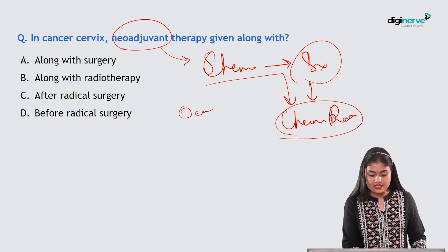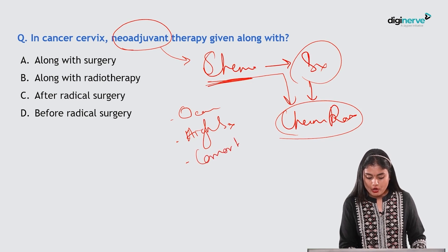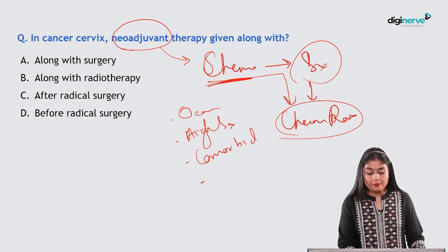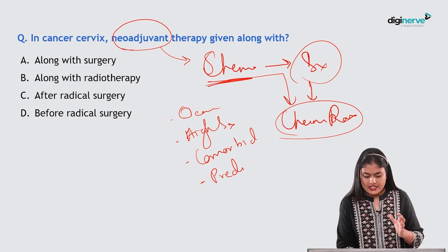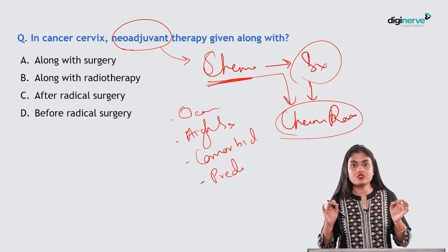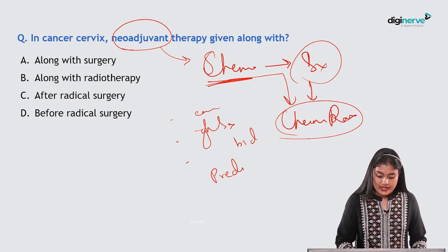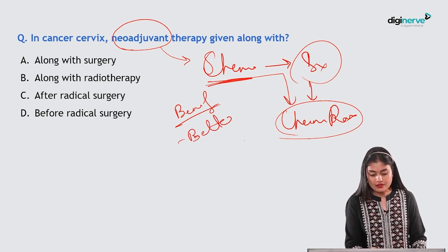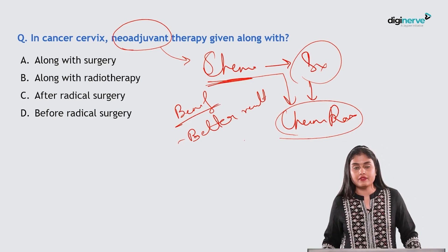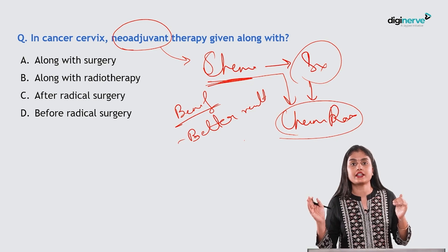Neoadjuvant therapy is used in ovarian cancers, patients with high surgical risk or multiple comorbidities, and when complete tumor debulking is predicted to be impossible upfront. The benefit is better results compared to direct surgery — improved effective lifespan. In such large tumors with risk factors, it is better to give chemo first, then surgery, followed by chemo-radiation.